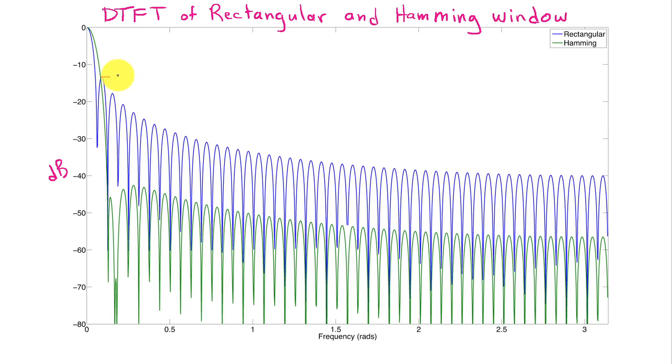So the rectangular window, as expected, is a peak side lobe height of about minus 13 dB, whereas the hamming window has a peak side lobe height of minus 41 dB. So there's quite a drop in side lobe height with the hamming window.